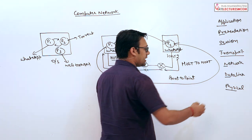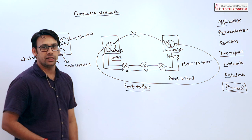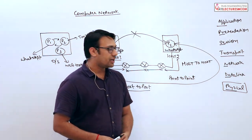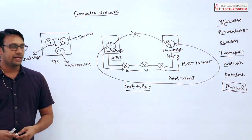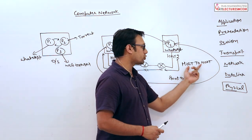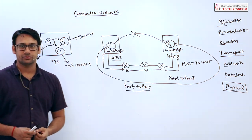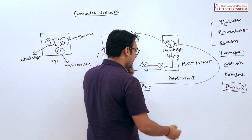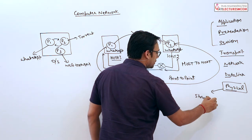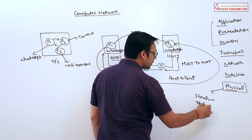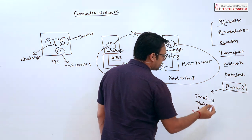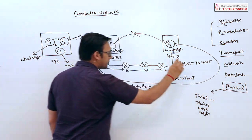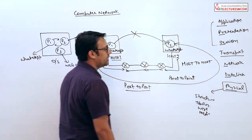The Physical layer deals with the physical topology of the network, the wires, cables, or communication medium — whether wireless or wired. The Data Link layer deals with point-to-point connectivity. The Network layer deals with host-to-host connectivity. The Transport layer deals with port-to-port connectivity. Above these we have three more layers: Application, Presentation, and Session.